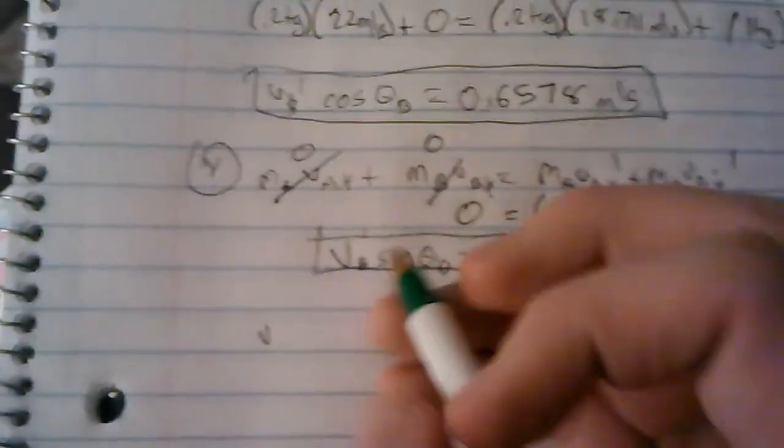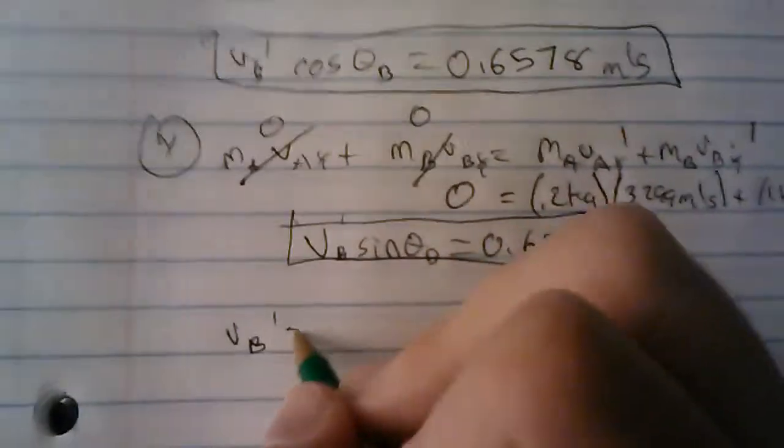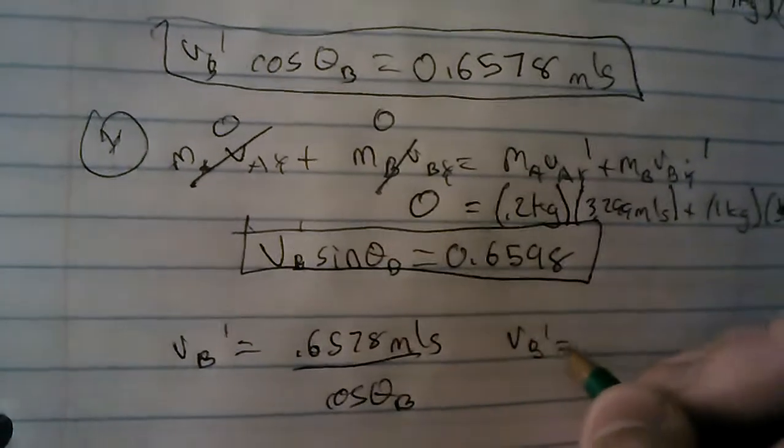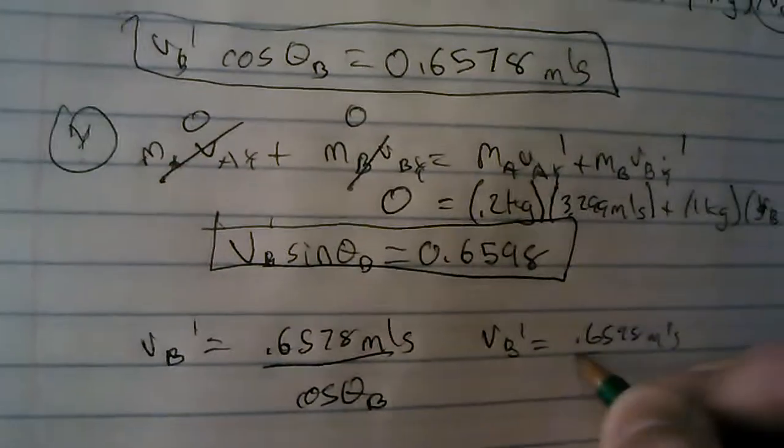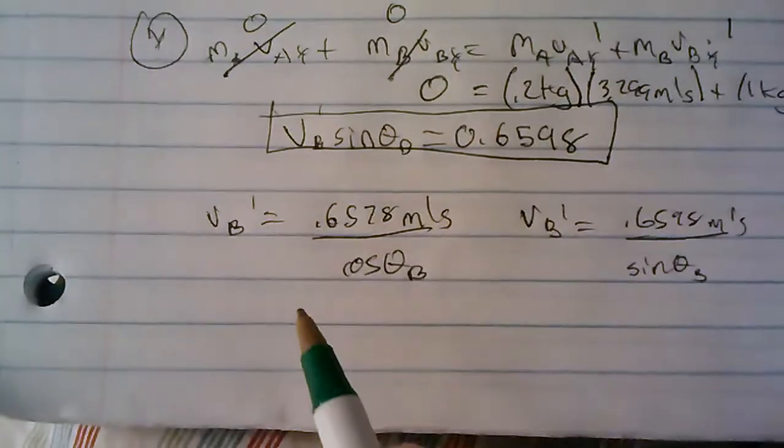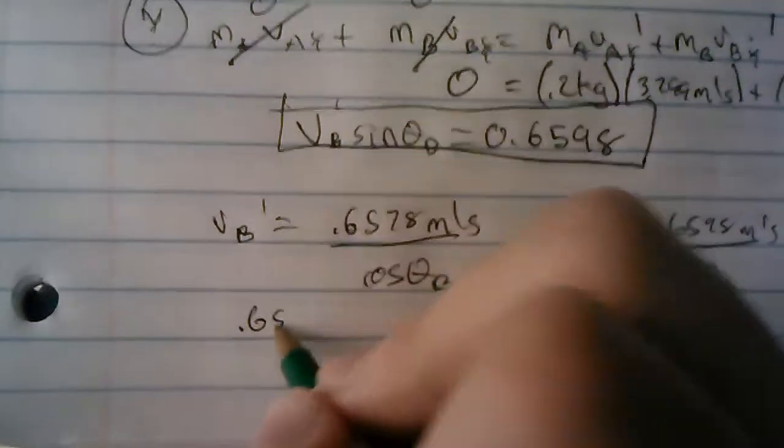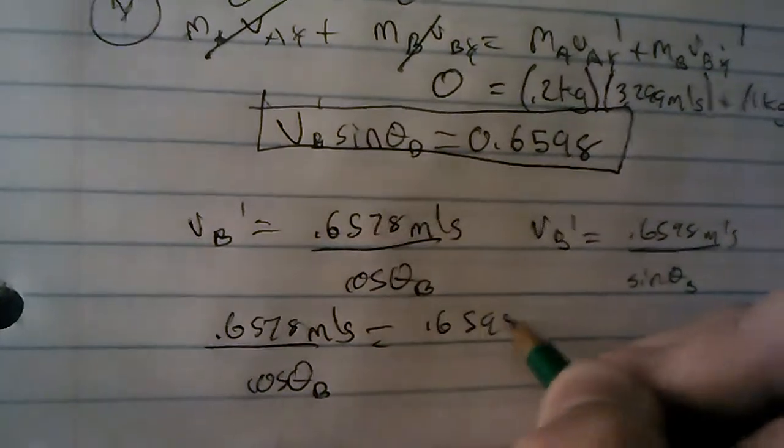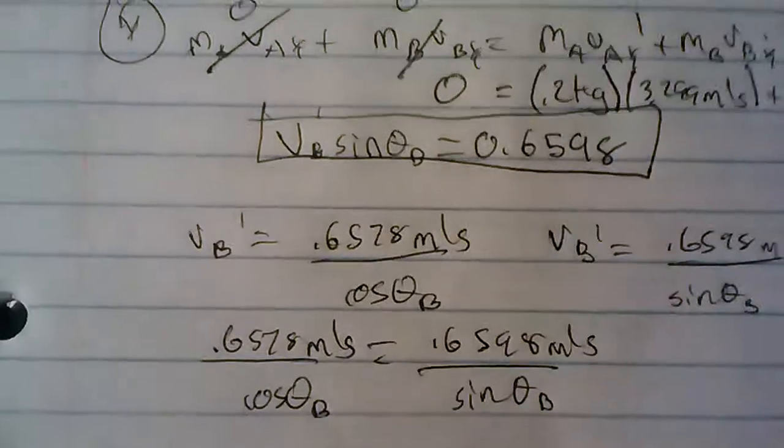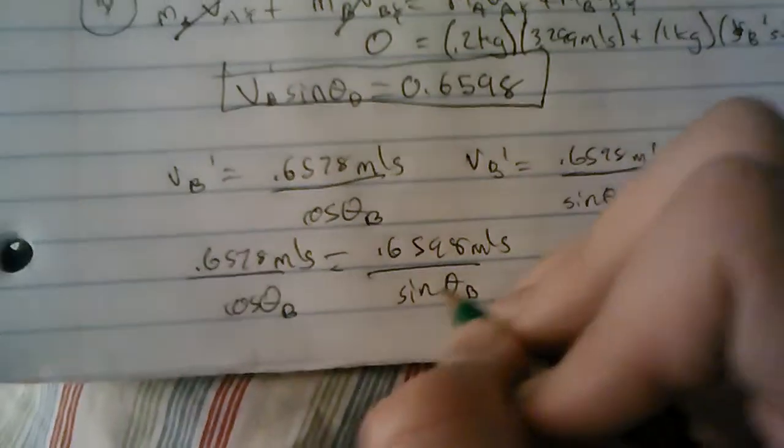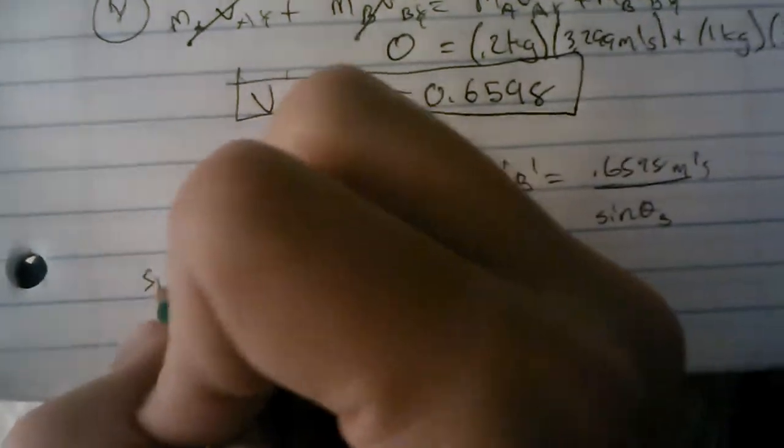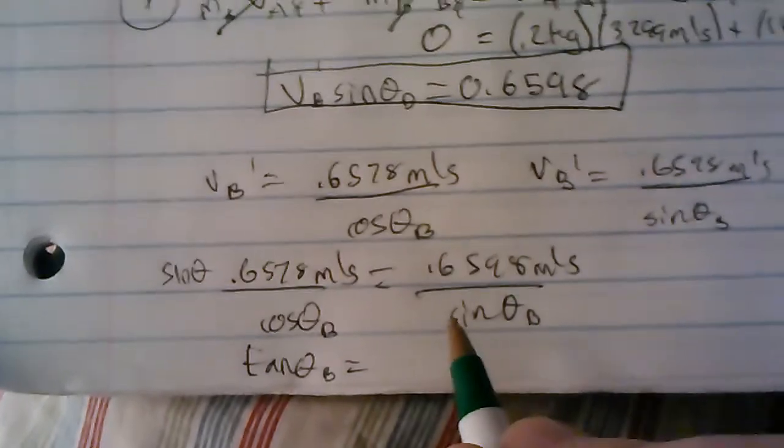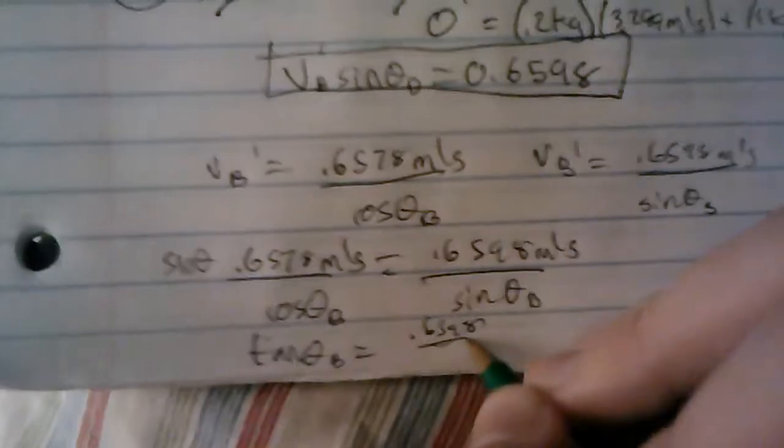So we have these two equations, so we can solve for VB prime. So VB prime equals 0.6578 meters per second over cosine of theta B, from that first equation. And then VB prime equals 0.6598 meters per second over sine of theta B. So we can put these equal to each other now. So 0.6578 meters per second over cosine theta B equals 0.6598 meters per second over sine of theta B. And I'm surprised those numbers are really similar, because I just came up with them out of the blue.